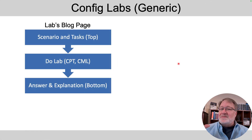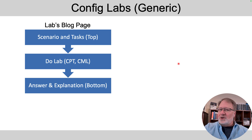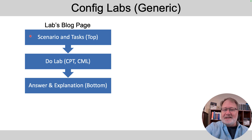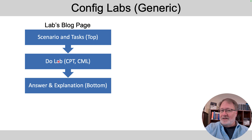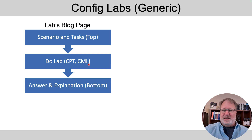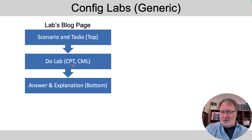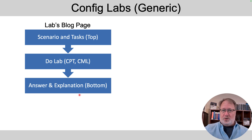The labs themselves are contained in blog pages on my blog, searchskills.com. Each of those labs begins with a description of what to do in the lab — the scenario and tasks at the top — then a short section that says to pause and do the lab. The labs are set up to be done on paper or with Cisco Packet Tracer, though not with CML, as there are too many devices for CML-free. The bottom half of the blog page gives the answer as well as an explanation as to why that answer is appropriate.